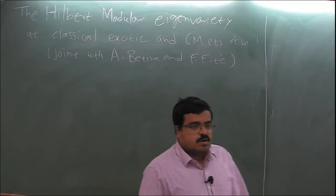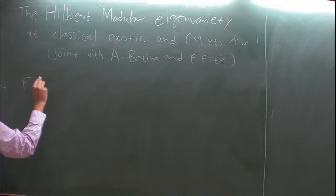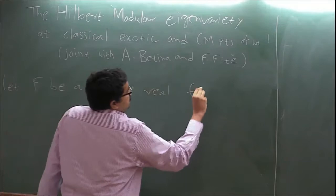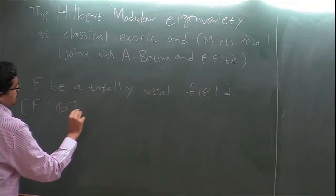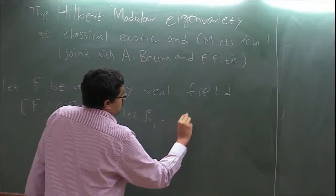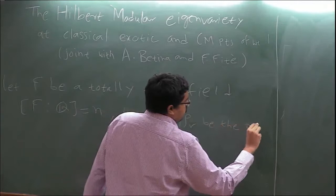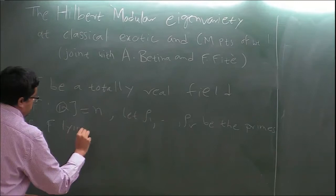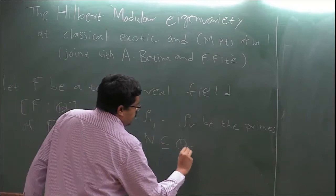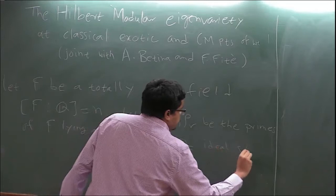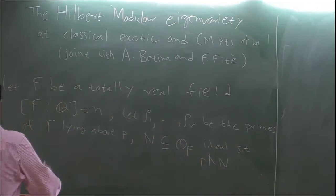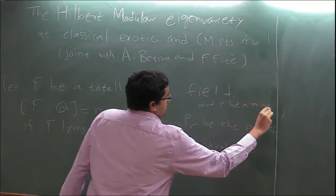Let's start with some notation. Let F be a totally real field and suppose the degree of F over Q is N, and let P_1 up to P_R be the primes of F lying above P, and let N be an ideal inside O_F, the ring of integers of F, such that P does not divide N. And P be a prime.